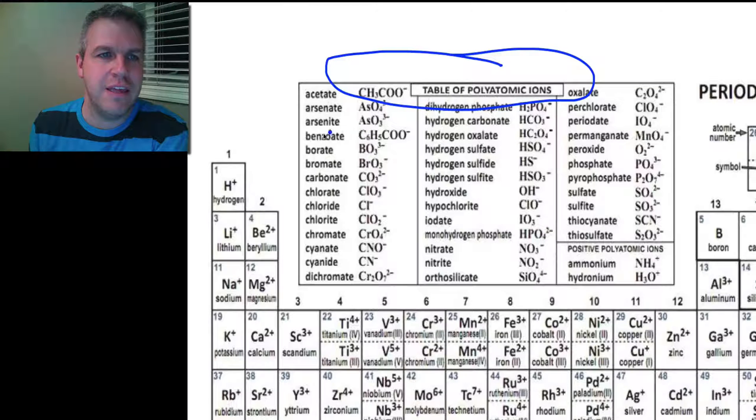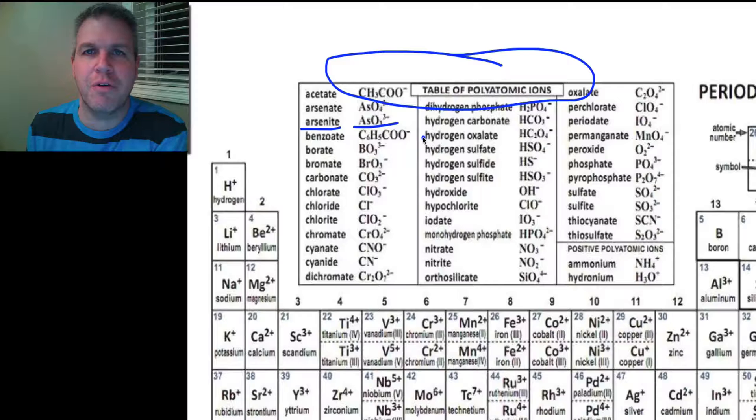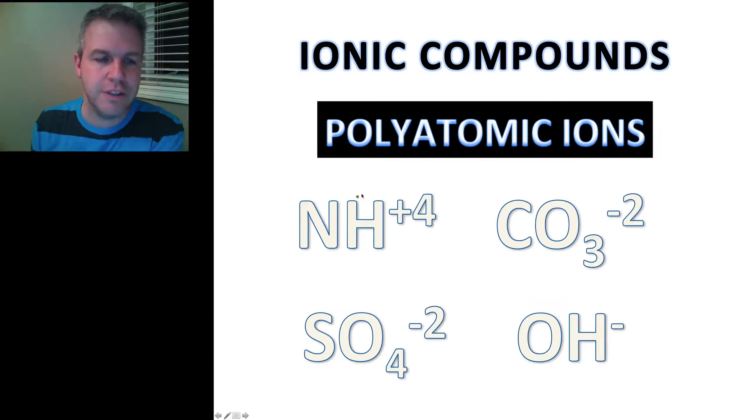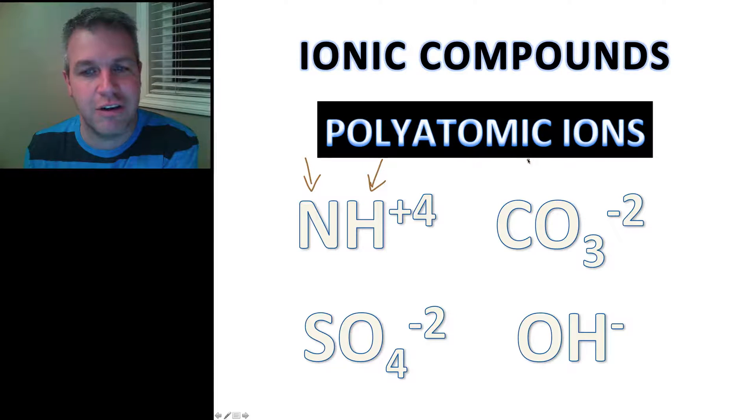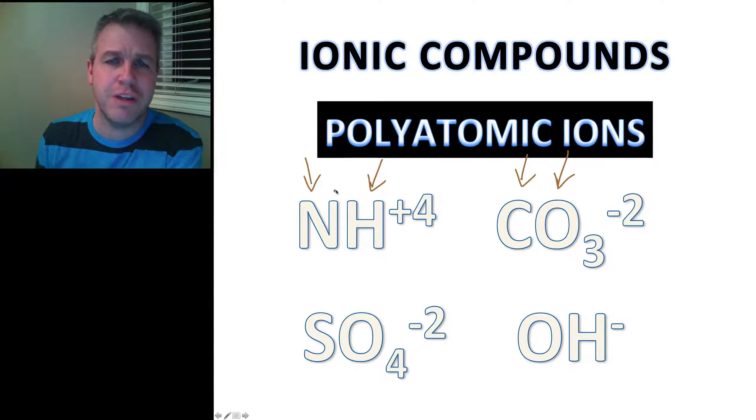And you can see that they'll give you the name of the polyatomic ion and then the chemical formula. You can see here I have two elements that are joined together. Actually they're always non-metals, and they are together and you treat them exactly like you would a regular ion.